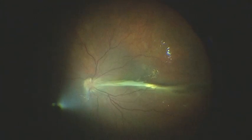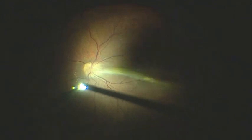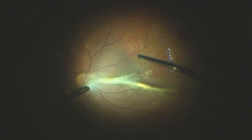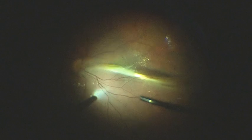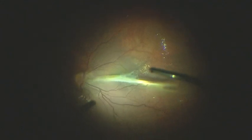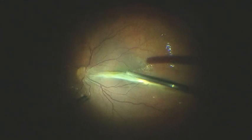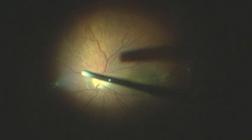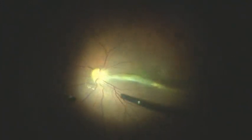Vitrectomy starts by observing the fold all the way to the temporal side and starting a core vitrectomy trying to observe the adhesion between vitreous and macula in the central area.